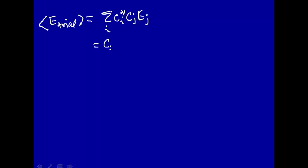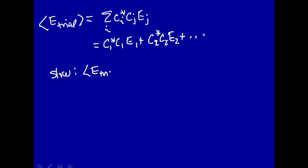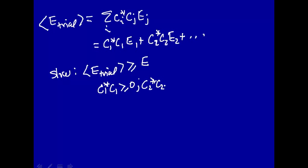Writing out the terms: E_trial equals C1* C1 E1 plus C2* C2 E2 plus and so on. What we want to show is that this trial energy will always be greater than or equal to the ground state energy E1. We recognize that C1* C1 is greater than or equal to zero, C2* C2 is greater than or equal to zero — these are all positive quantities even if the coefficients themselves are negative, because squaring them gives positive values.